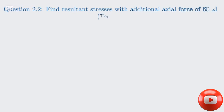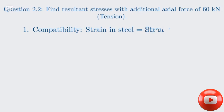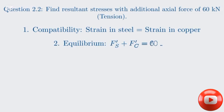Now let's move on to Question 2.2: finding the resultant stresses when we add an axial tensile force to the temperature change. An additional force of 60 kilonewtons is applied, and we are finding the final resultant stresses in the copper and steel. The beauty of this problem is that we can use the principle of superposition — we find the stresses caused by the external force and simply add them to the thermal stresses from Question 2.1. To do this, we need to determine how the external force is distributed between the steel and copper.